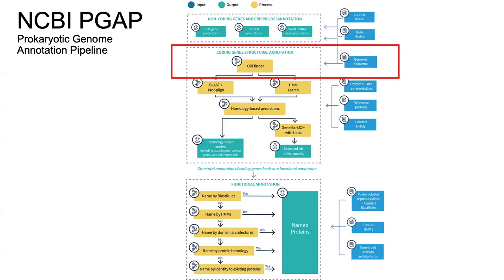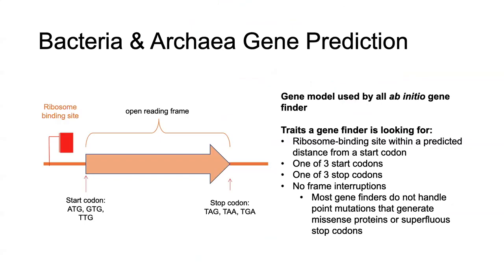Open reading frames in bacteria and archaea are fairly easy to predict. It uses an ab initio gene model of how genes are determined in bacteria and archaea, looking for a very small number of elements. Those include a ribosome binding site predicted within some distance before the start of a potential gene, and one of three stop codons in bacteria and archaea.